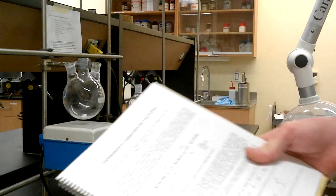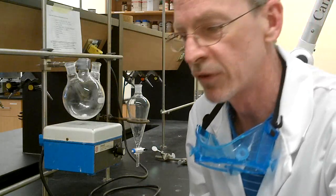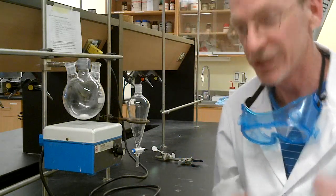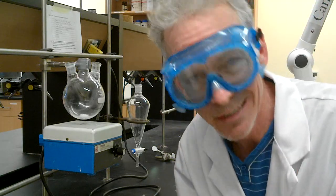Welcome back. Experiment number nine, the oxidation of 2-octanol. Fairly straightforward reaction. It's an oxidation, obviously. So we're going to be using bleach to oxidize the alcohol to a ketone.